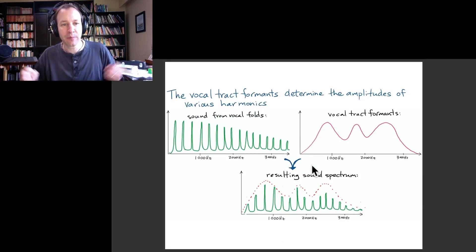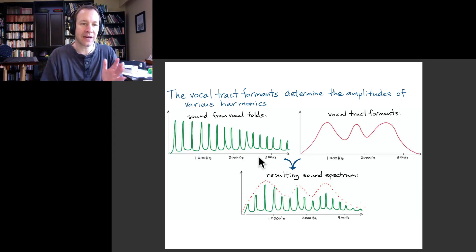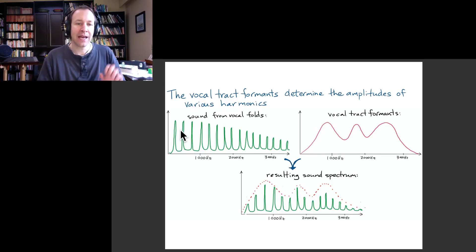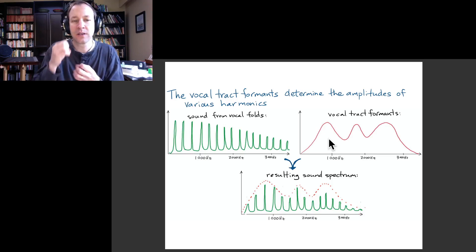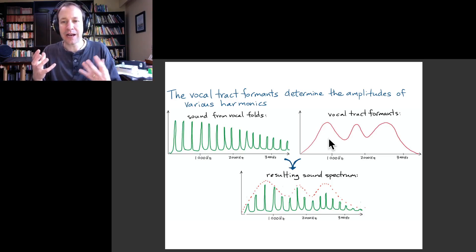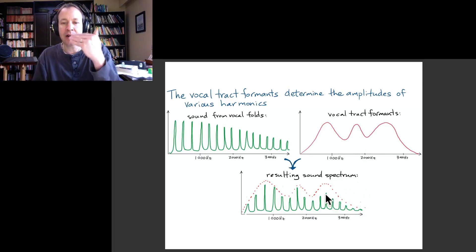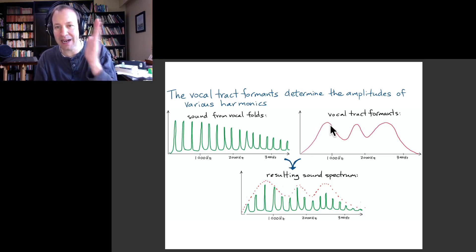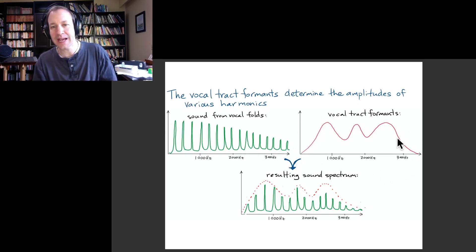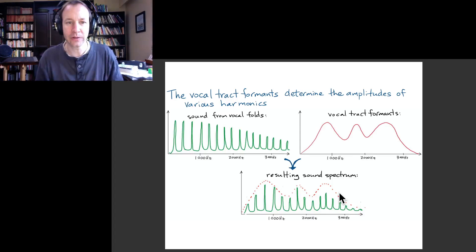We can understand the production of the final sound as a combination of the sound produced by the vocal folds — which has a fundamental frequency and many higher harmonics — and then that sound gets processed by the vocal tract. Some frequencies are more resonant inside the vocal tract and therefore lead to a larger amplitude of oscillation. In the final resulting sound spectrum, you see harmonics with a higher amplitude at the frequencies where you have these formants. So the formants are the regions of frequency that show a peak when you plot this spectrum, and the combination gives the final sound coming out of your mouth when you're singing.